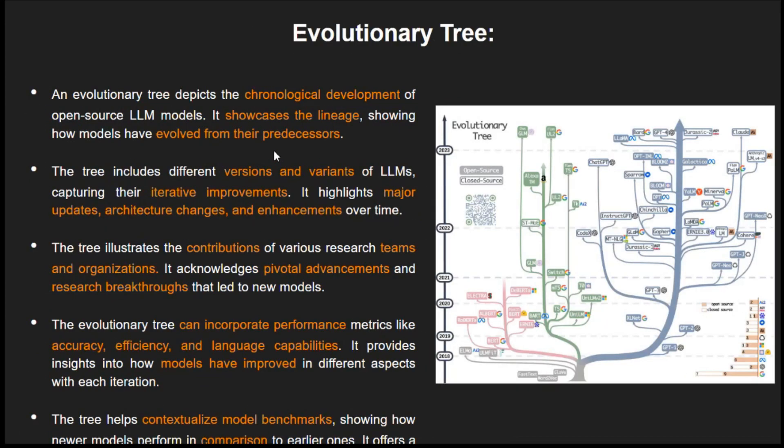Now imagine an evolutionary tree tracing the ancestry of these models. It shows how they have evolved over time, improved, and become more sophisticated. You can even spot major updates regarding architecture changes and all the advancements that happened in between. This tree is like a highlight reel of different research teams, contributions, and everything. It's a history lesson showing us how these models have improved in terms of accuracy, efficiency, and other language model skills.